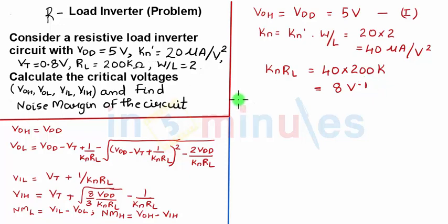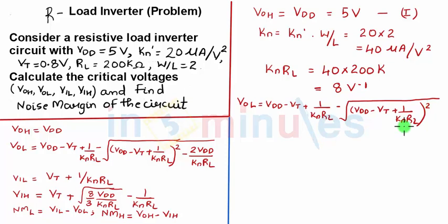Now let's find VOL. We have the equation of VOL on our left hand side. Let's rewrite that equation again. VDD minus VT plus 1 by KN RL minus the square root of VDD minus VT plus 1 by KN RL the whole square minus, under the same root still, it's not a different root remember that, I'm using it because I don't have enough space, twice VDD by KN RL.